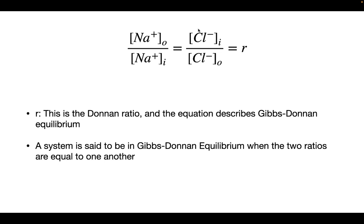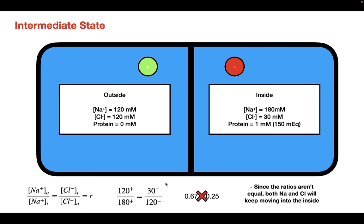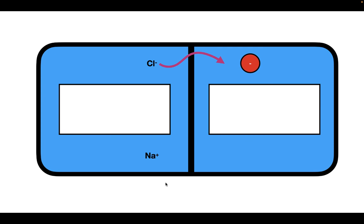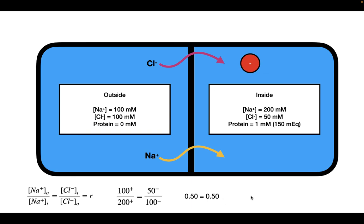When the system reaches Gibbs-Donnan equilibrium, there is no more net movement of sodium or chloride. Going back to the intermediate state and plugging values into the equation, we can see the ratios are not yet equal, so both ions continue moving into the inside compartment. After reaching Gibbs-Donnan equilibrium, the two ratios are both equal to 0.5, and it is at these particular concentrations that chloride and sodium stop having net movement into the inside.